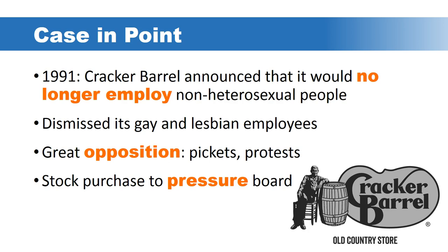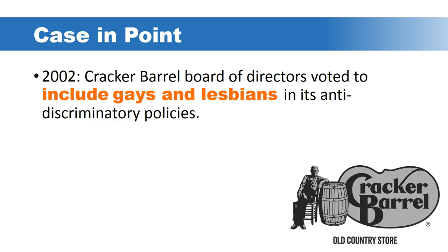In 1991, Cracker Barrel — an American chain of restaurants and gift stores with a southern country theme — announced that it would no longer employ non-heterosexual people and dismissed its gay and lesbian employees. It was met with great opposition: there were pickets and protests, and the LGBT community bought company stock to pressure the board of directors to change its policies. Cracker Barrel faced sustained negative customer reaction, and by 2002 its board of directors voted to include gays and lesbians in its anti-discriminatory policies, responding to market pressure to be a more inclusive company.